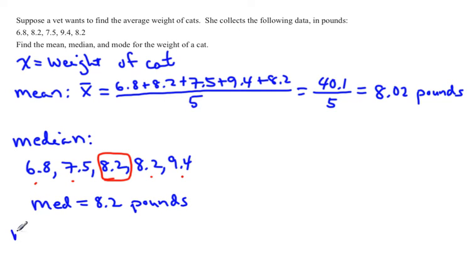To find the mode, it's just the most commonly occurring number. Once you have the data in order, it's quite easy to find the mode. In this case, you're going to notice 6.8 occurs once, 7.5 occurs once, 8.2 occurs twice, and 9.4 only occurs once. So therefore, the mode is 8.2 pounds.